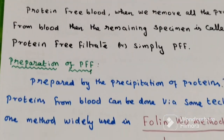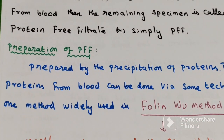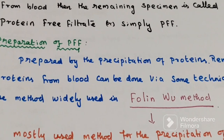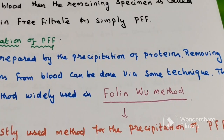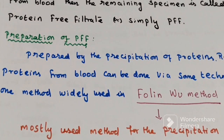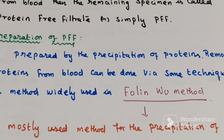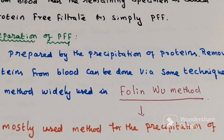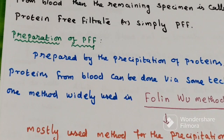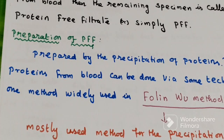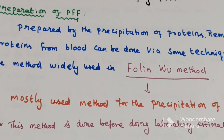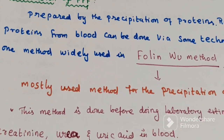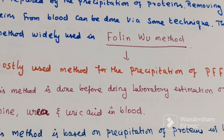Next is the preparation of protein free filtrate. It is prepared by precipitation of protein. Removing protein from blood can be done via some techniques, but the most widely used method is called the Folin-Wu method. This is the most used method for precipitation of protein to obtain protein free filtrate.